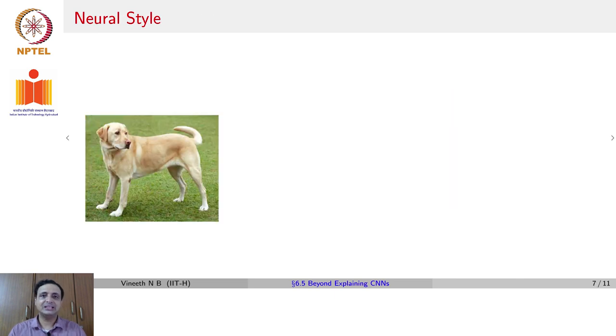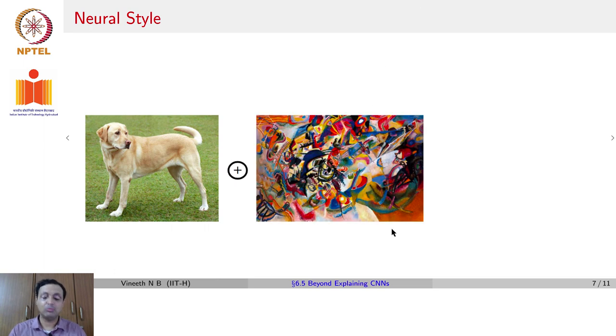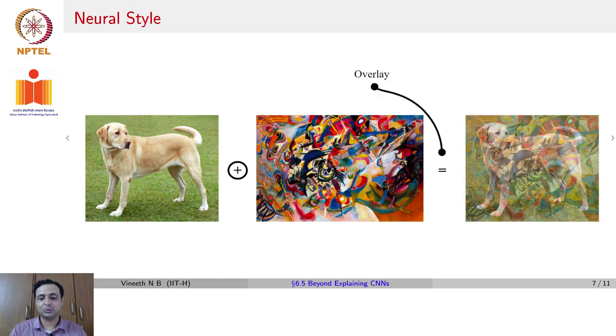And now let us see the other similar interesting application, which is known as Neural Style or Neural Style Transfer as it is popularly known. The idea here is given an image and given a particular style, let us say a modern art style, you want to know, how do I get this image in this style? For example, can I take my photograph and make it look like Van Gogh had painted it? How would I get that style into my photo? That is what we want to study here.